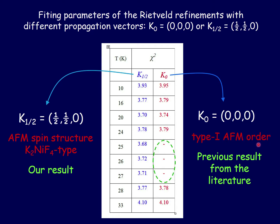We believe that this is not correct and we should use a different propagation vector, K_half. This would lead to a different antiferromagnetic structure at low temperature, which is called K₂NiF₄ type.